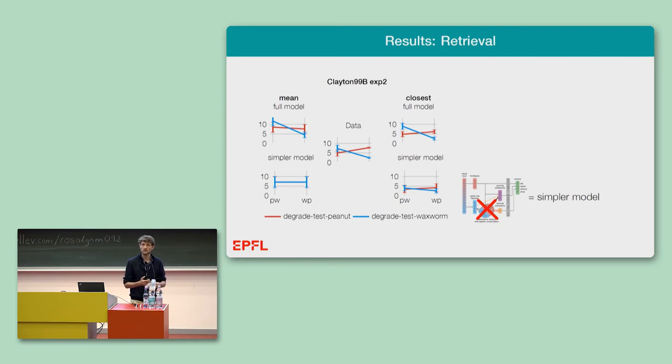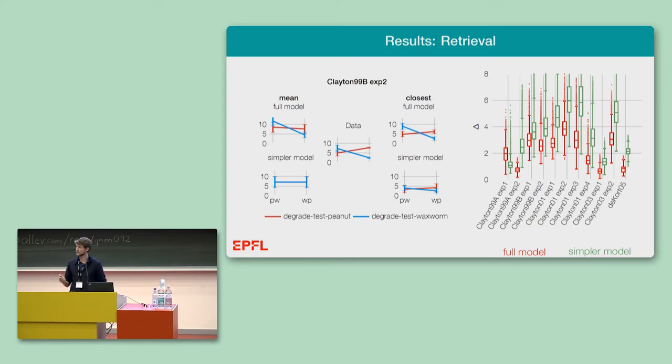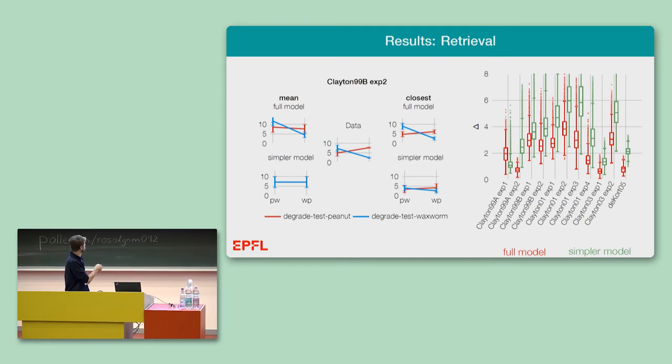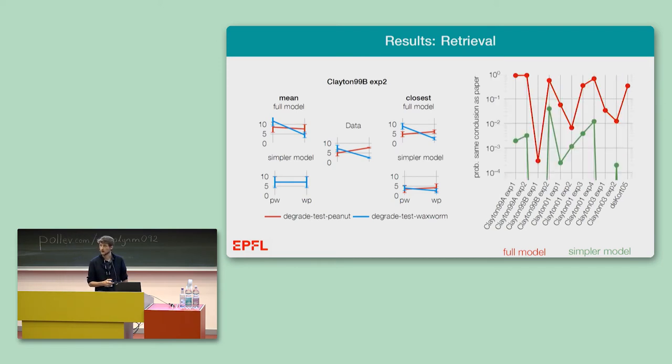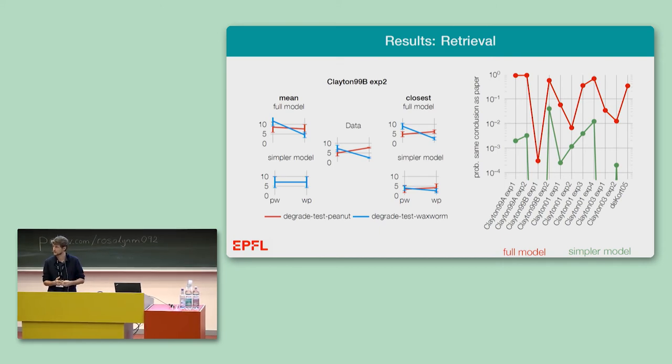With this simple model of associative memory, of episodic-like memory, we can capture, for example, the results in this experiment here, where, again, I compare it to the simpler model that does not have the associative memory module, and that does not capture the main effect in this study. If we look across all the experiments that looked at episodic-like memory, we see the same effect as before - that the full model has more mass at lower differences between simulated and actual data, and the fraction of simulated experiments that reach basically the same conclusion as the experimental paper - we see that the full model performs way better than the simpler model.